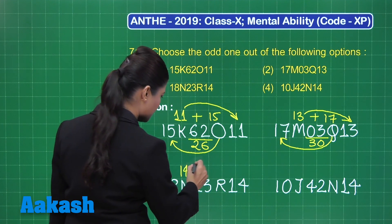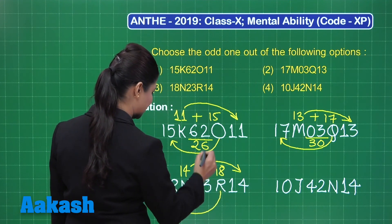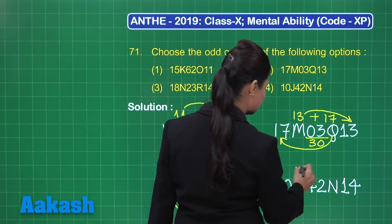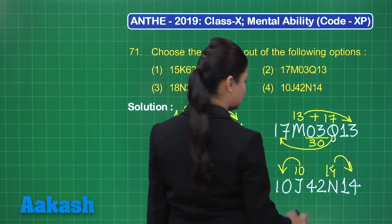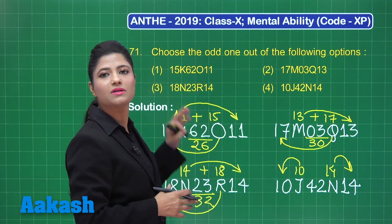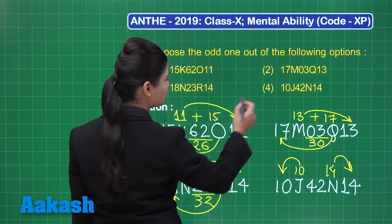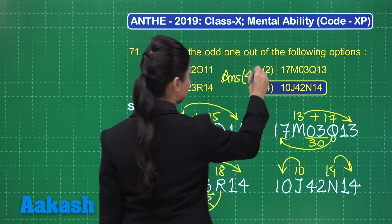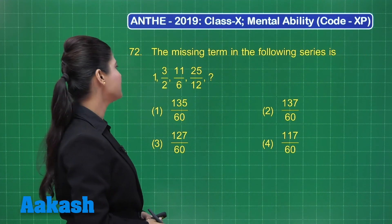N comes at the 14th alphabet position, and R comes at the 18th position. 14 plus 18 gives the sum total as 32, and the reverse is 23. Now for the last option: J comes at the 10th alphabet position and N comes at the 14th alphabet position. You can clearly see there is a difference in pattern here. This is the odd one out — it does not follow the same pattern as the rest. So the correct answer is option number four.